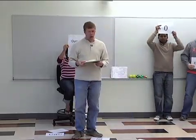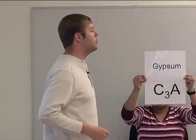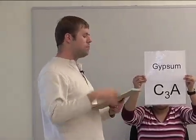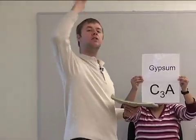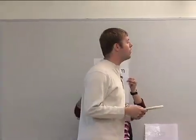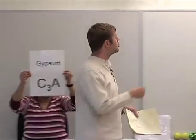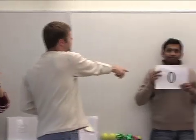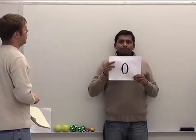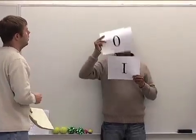So we have this ettringite stuff formed in solution. We're still at time zero. Then ions build and build and build, getting to higher and higher levels. And then all of a sudden, we start to change from stage zero to stage one. Sid, please change to stage one.